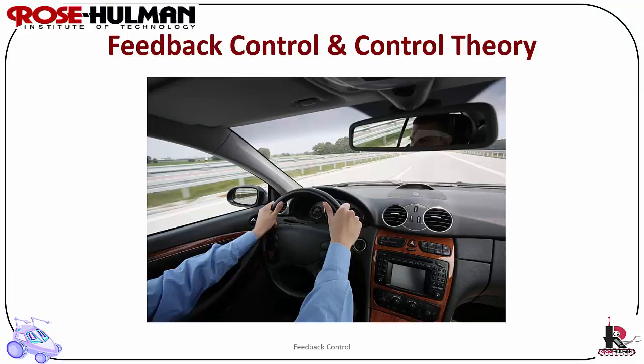Feedback control is a means of getting a robot to achieve and maintain a desired state, such as by tracking or going to a point. This is also called a servomechanism or regulation. The desired state or goal state is the set point, and it is achieved by continuously comparing its current state with its desired state. The difference between the current and desired state is the error. The goal of any control system is to minimize the error. Feedback control is the lower level of control theory for controlling wheels or continuously moving actuators.